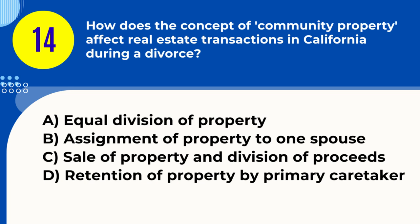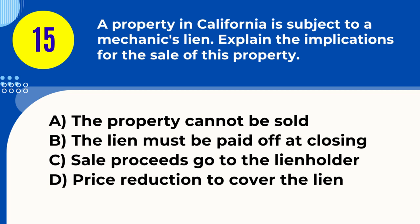Question 14. How does the concept of community property affect real estate transactions in California during a divorce? A. Equal division of property tax B. Assignment of property to one spouse C. Sale of property and division of proceeds D. Retention of property by primary caretaker. Answer: A. Equal division of property. Explanation: In California, community property laws generally require an equal division of property acquired during marriage in a divorce.